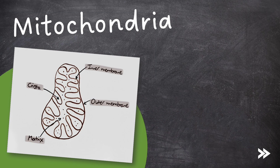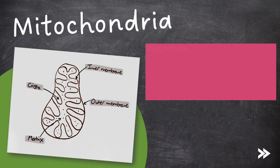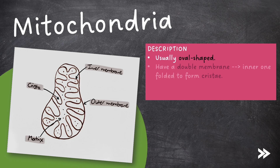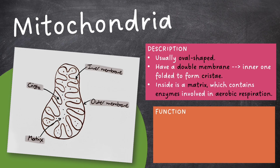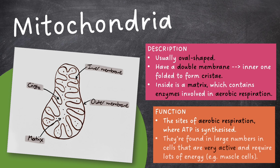Next, we have mitochondria, which are usually oval-shaped. They have a double membrane, of which the inner is folded to form cristae. Inside is a matrix, which contains enzymes involved in aerobic respiration. Mitochondria are the sites of aerobic respiration, where ATP is synthesized. They're found in large numbers in cells that are very active and require lots of energy, such as muscle cells.